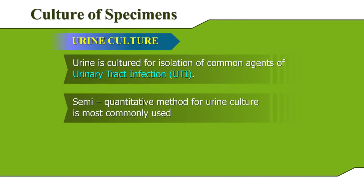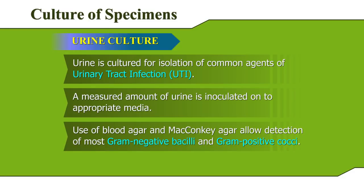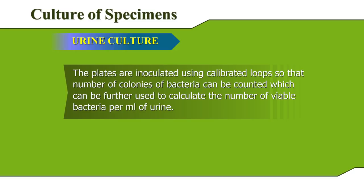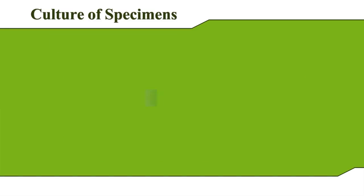Culture of Specimens — Urine Culture. Urine is cultured for isolation of common agents of urinary tract infection. A measured amount of urine is inoculated onto appropriate media. Use of blood agar and MacConkey agar allow detection of most gram-negative bacilli and gram-positive cocci. The urine should be mixed thoroughly before plating. Calibrated loops are used so that the number of colonies can be counted to calculate the number of viable bacteria per milliliter of urine. This method is called the standard loop method, and usually a loop of calibration 0.01 milliliters is used.